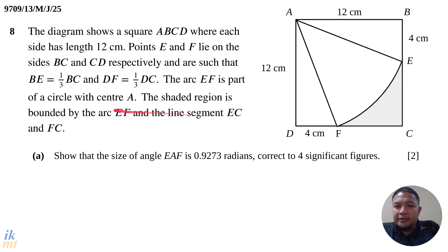The shaded region is bounded by the arc EF and the line segments EC and FC. I think all the information that we need for the first few questions are already there, so let's proceed.